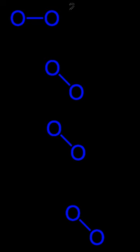Peroxides are a group of compounds with the structure R−O−O−R. The O−O group in a peroxide is called the peroxide group or peroxo group.